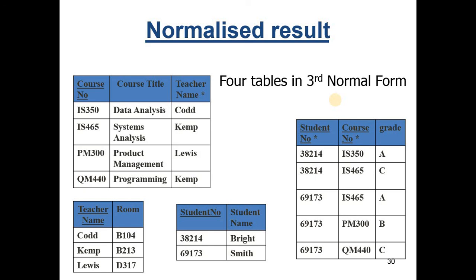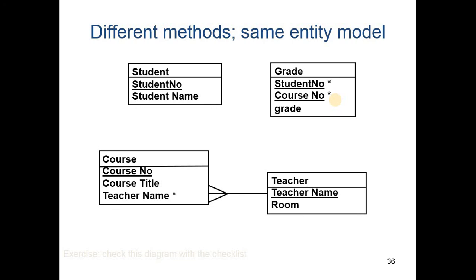I showed what entity relationship model that led to. So here is the model in question. Let's get the relationships in. Each student takes many grades. Each course has many people registered on it. There's the four tables in third normal form. So that is a second perspective on how to normalize this data.